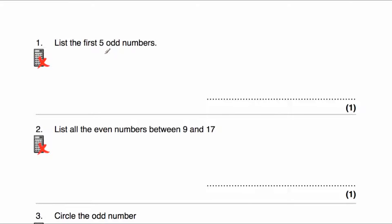Question number one says: list the first five odd numbers. The first five odd numbers are 1, 3, 5, 7, and 9. Because obviously 2, 4, 6, and 8 are all even. So we would just go up in the odd numbers: 1, then skip 2, then 3, skip 4, then 5, skip 6, then 7, skip 8, and then 9.